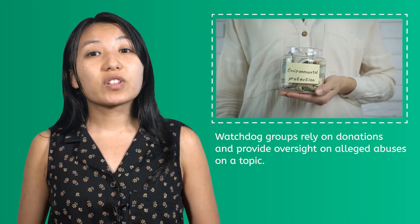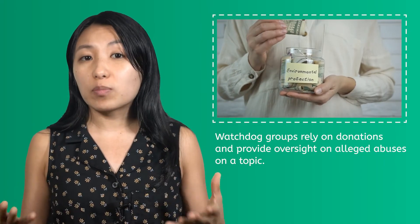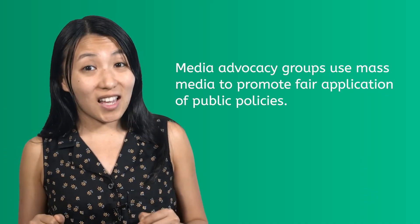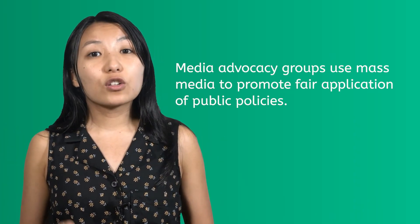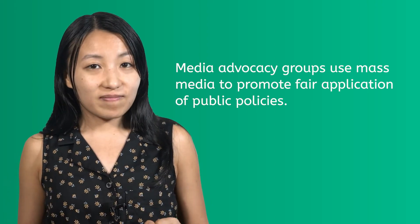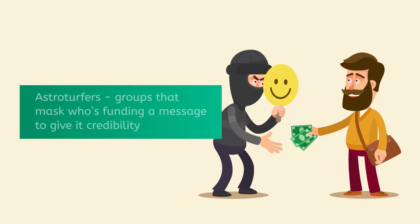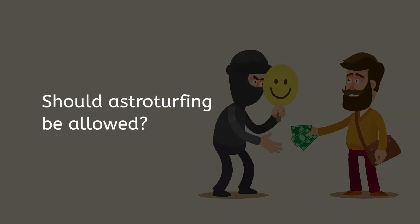Another type is watchdog groups — organizations that are usually non-profit, meaning they aren't seeking to make money like a business. Watchdog groups rely on donations and provide oversight on alleged abuses on a topic such as environmental practices. Media advocacy groups are a relatively new concept; they use mass media to promote fair application of public policies, targeting groups and communities that are often disadvantaged. Another new type of advocacy group is called astrotufers — groups that mask who's funding a message in hopes of giving it credibility without tying it to the financial source, thereby disguising the organization's intended influence on the subject. Take a moment to consider whether you think astroturfing should be allowed, and write down your answer in the guided notes.